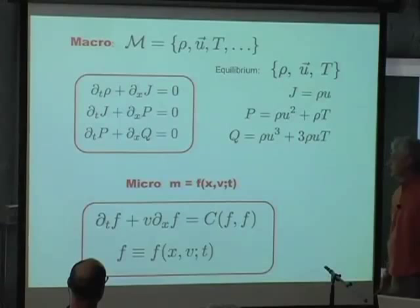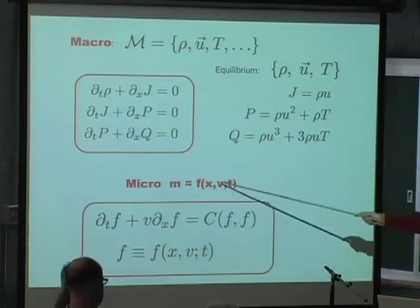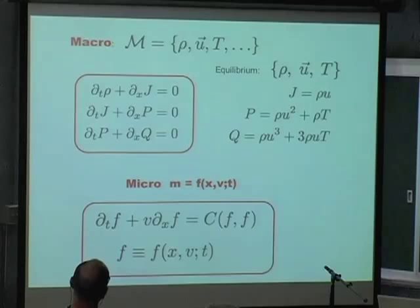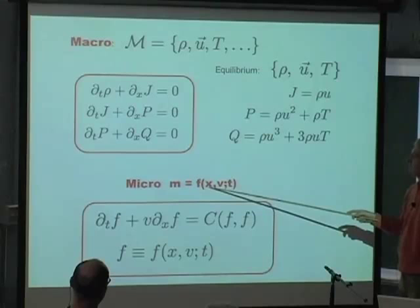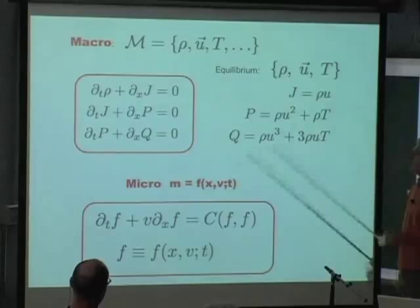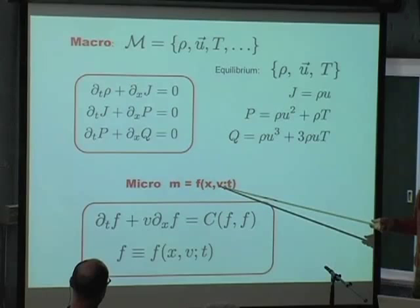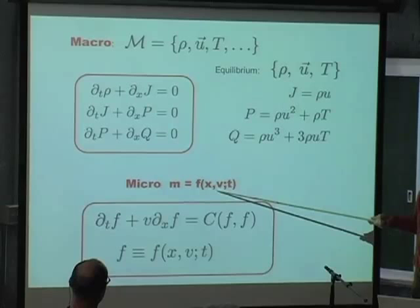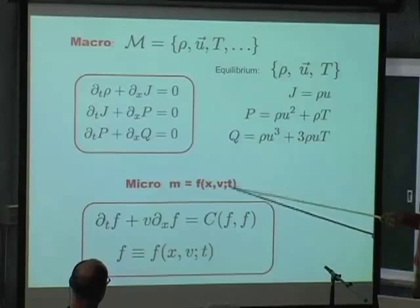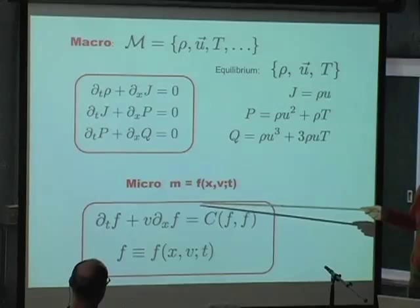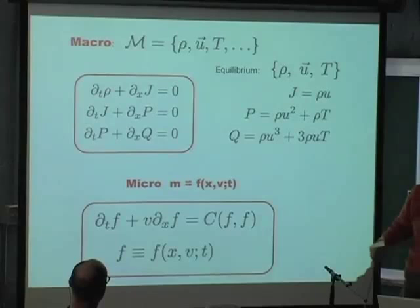This will be the macroscopic model we have to solve on the computer. The microscopic model will essentially be associated with the one-body distribution function. This f(x,v,t) is the probability of finding a particle, a molecule, at position x and time t with a given velocity v. Please appreciate immediately that there is a wealth of additional information in this distribution function — it has an additional three dimensions, because this would be a velocity vector plus space and time. In principle, this microscopic world contains way more information than you need to compute your fluid.